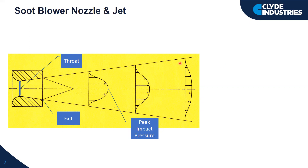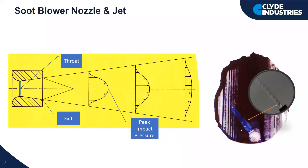At the throat, the steam reaches the speed of sound. As it expands in the diverging section, it exceeds the speed of sound. The pressure is then reduced further through the diverging section. Eventually you end up with a supersonic jet. What we are interested in is being able to reduce this pressure down to atmospheric pressure at the exit of the nozzle. The performance of the jet is measured by what's known as the peak impact pressure, which is the centerline velocity of this jet — as you go further down, it will decay.